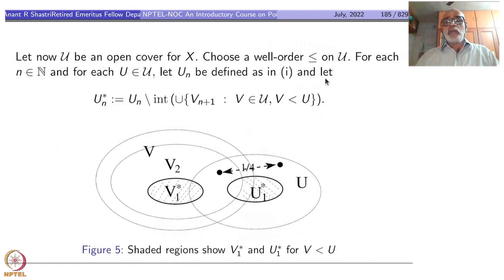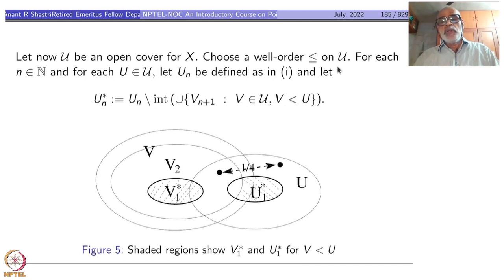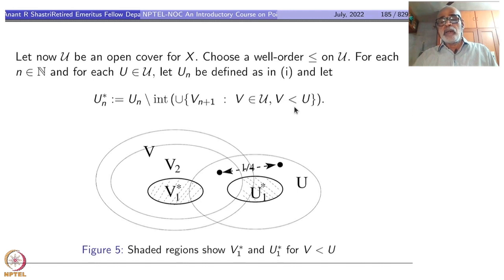We give one more definition. U_n* is a subset of Un where we throw away the interior of the union of all V_{n+1}'s, where V ranges over all elements of the cover occurring before U in the well-order. So for each fixed n, V varies over the initial segment before U. Take the union of all those V_{n+1} parts and remove their interior from Un to get U_n*.